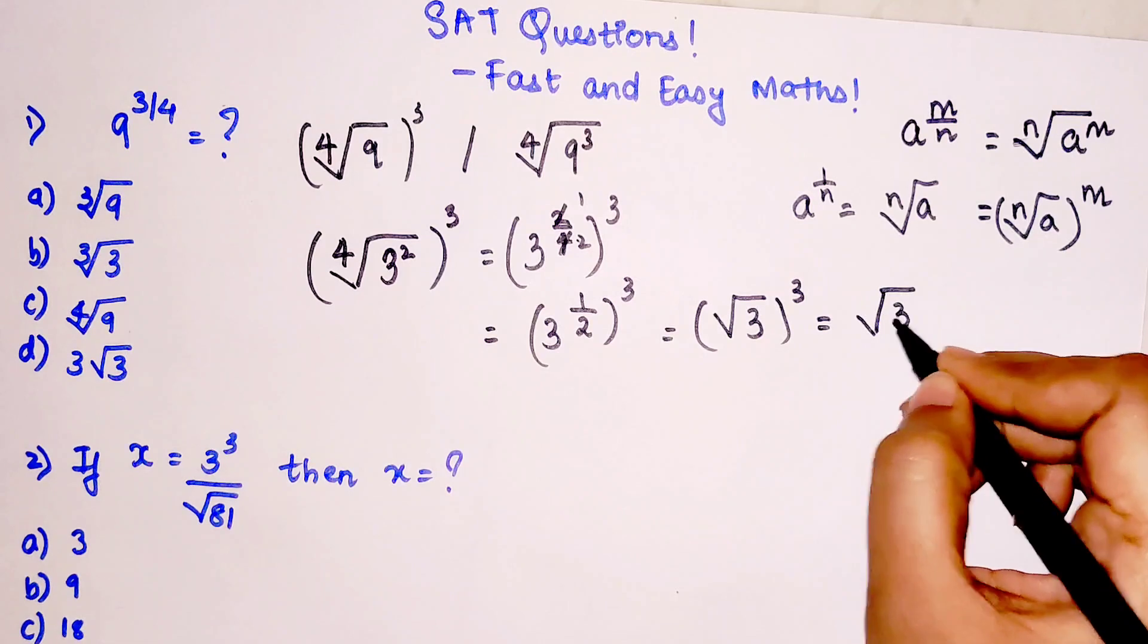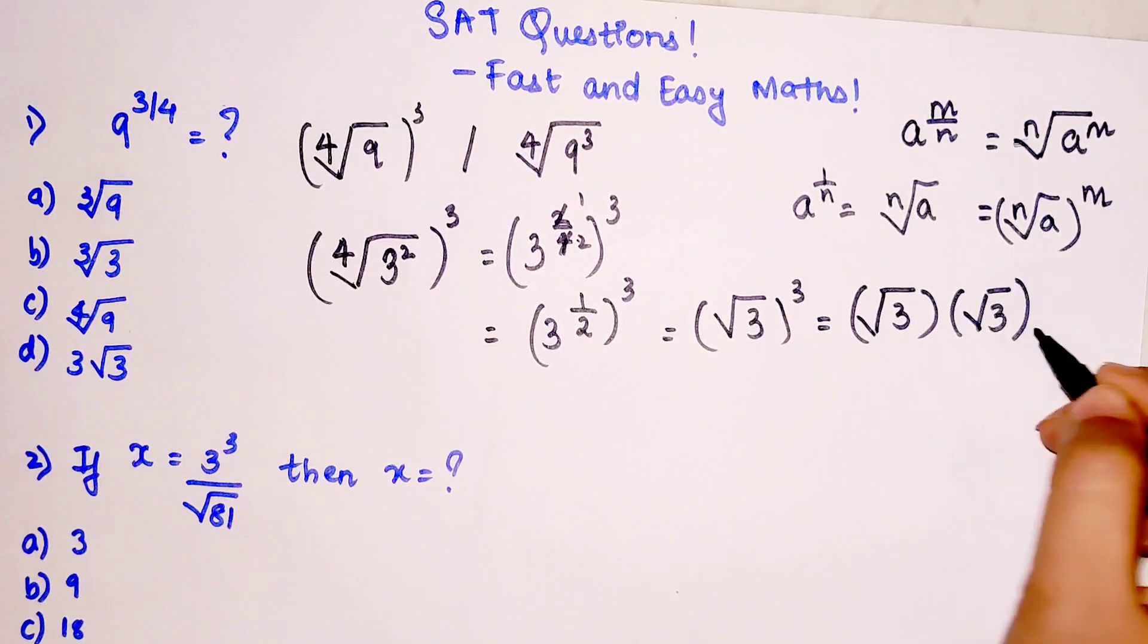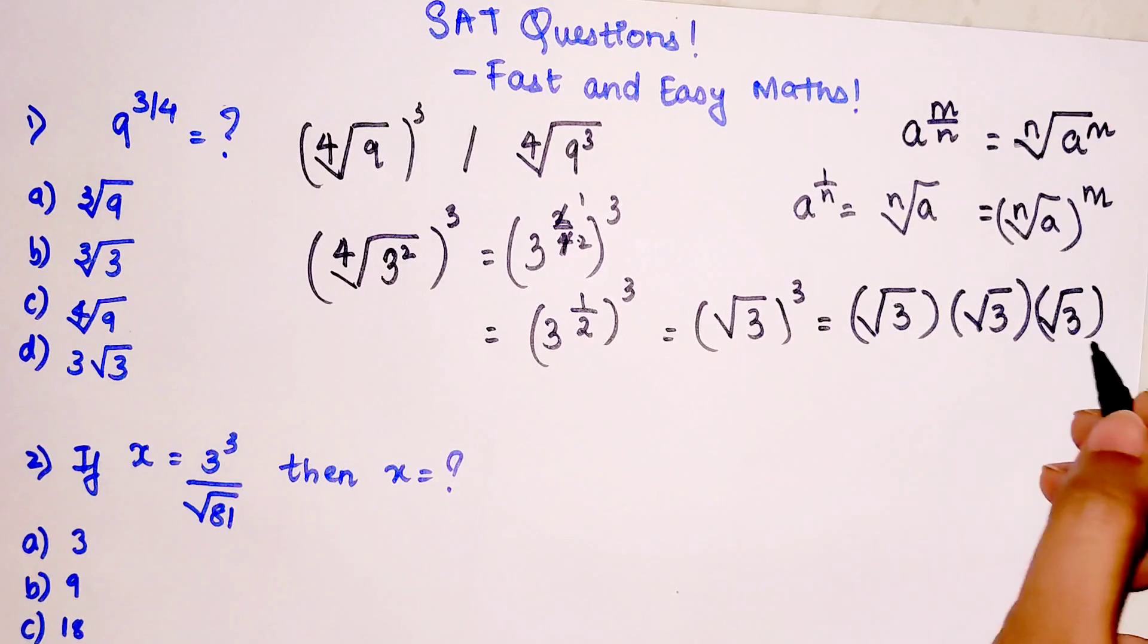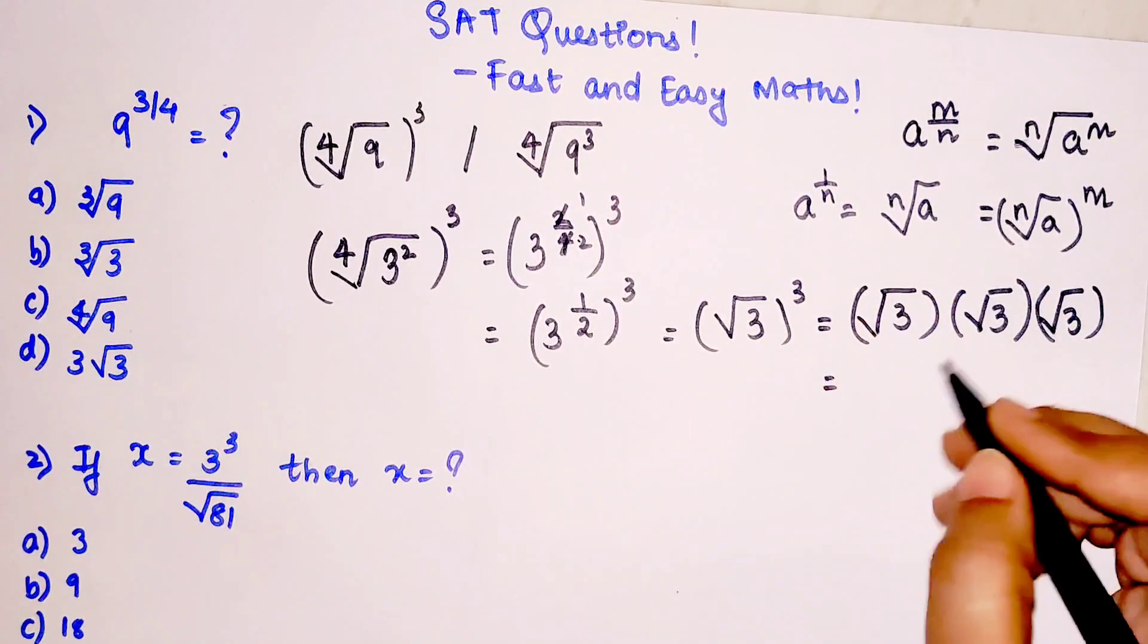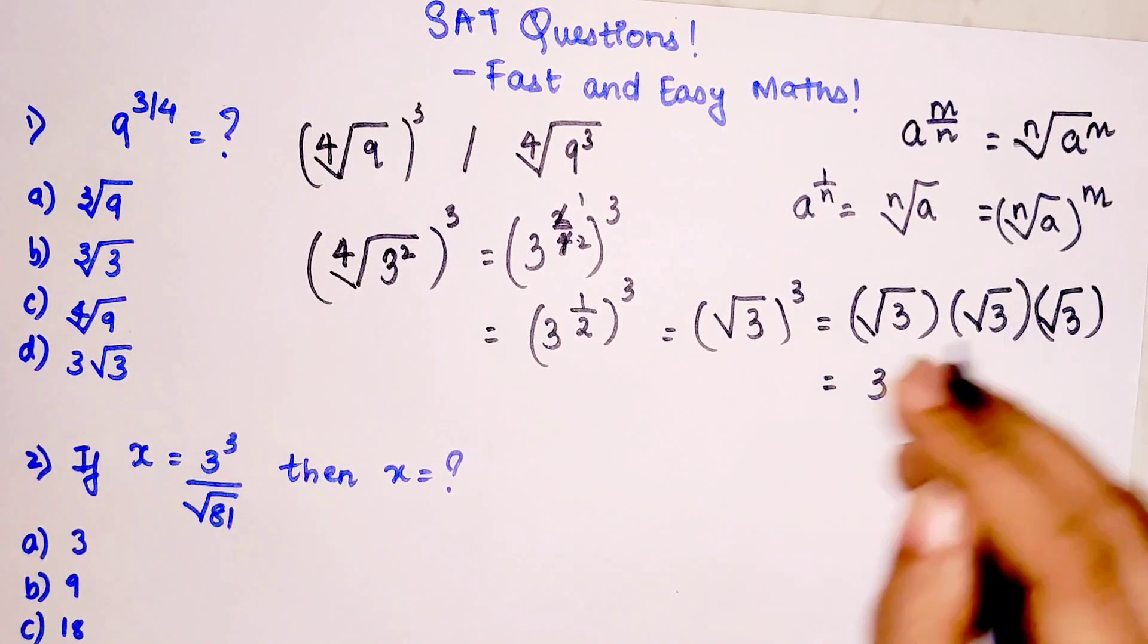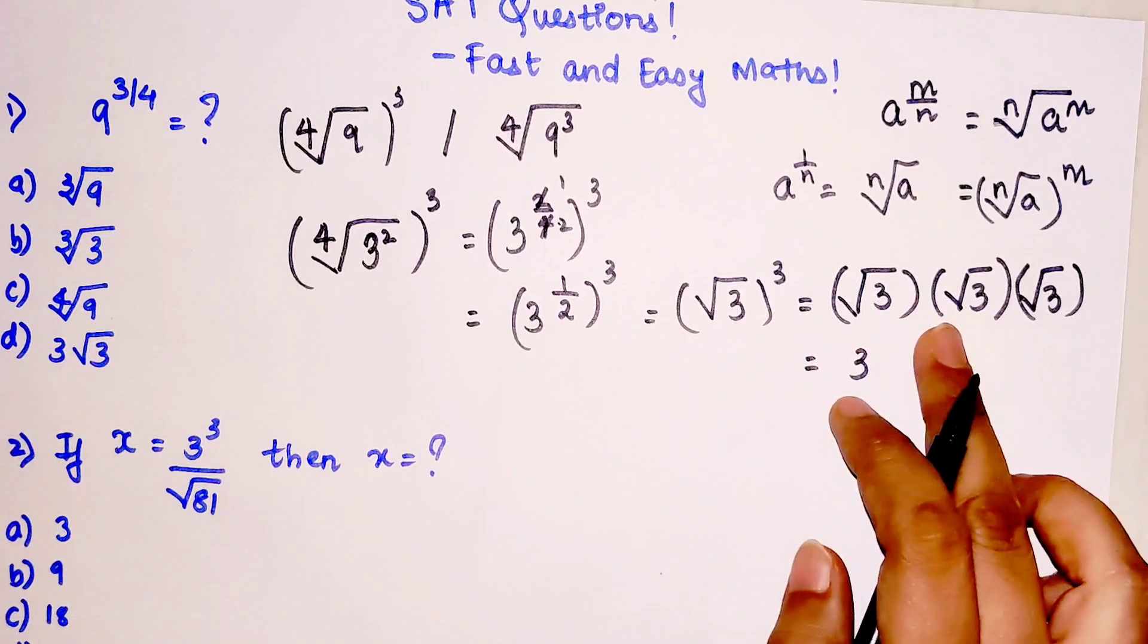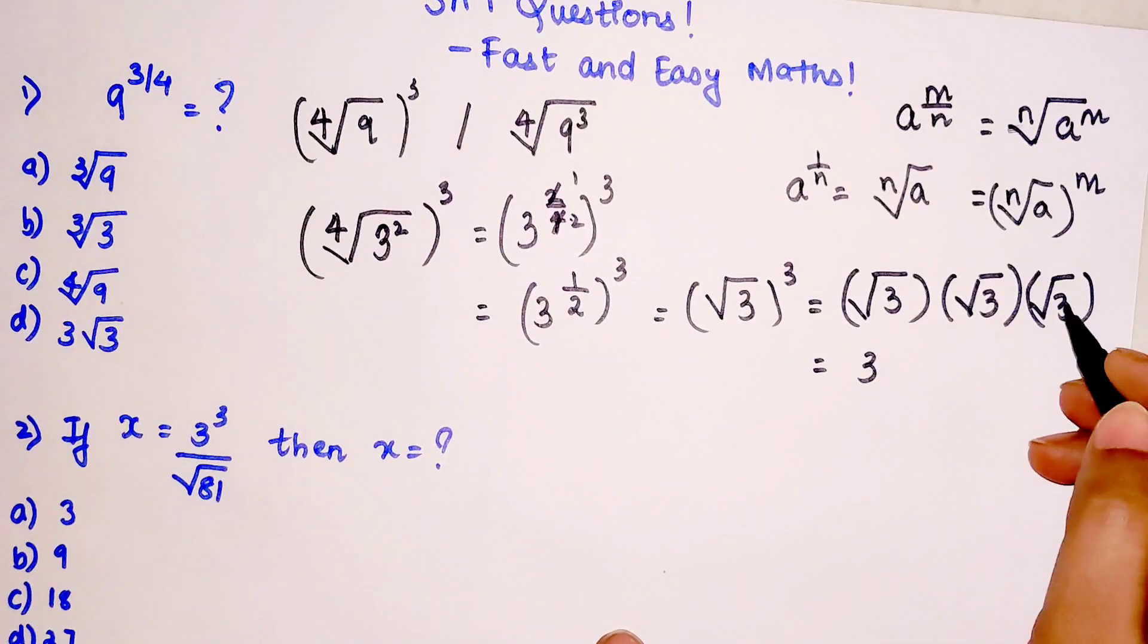So here we have root 3 times root 3 times root 3. Root 3 times root 3 gives you just 3 - the square root and square root when multiplied with each other just becomes one, the index becomes one. And this root 3 will be written as is.